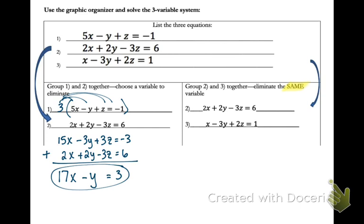Okay, over to the right side. Again, we highlighted the word same, so we need to eliminate the same variable here. We're going to cancel out our z's. In order to do that, we need to make our z's opposites. So since I have a negative 3z and a positive 2z, I'm going to make those 6 and negative 6.